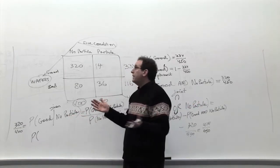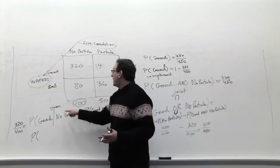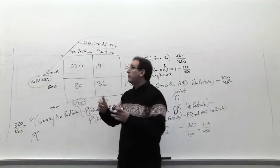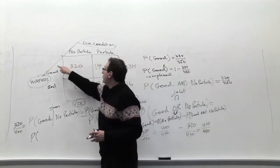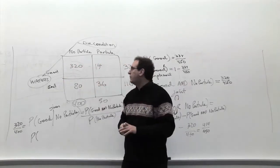What's the conditional probability? Well, you have a choice. It could be good given no particle like this one. It could be no particle given good, just reversing it, which are different numbers. It could be particle given good, it could be bad given no particle. I think there are eight choices or 16 choices.